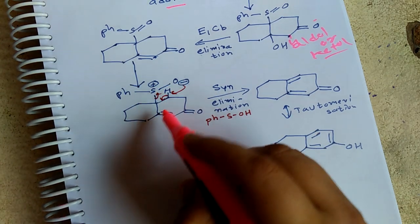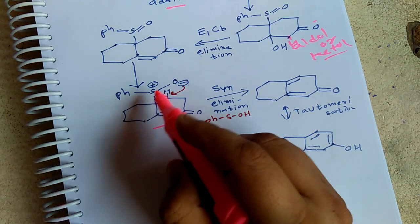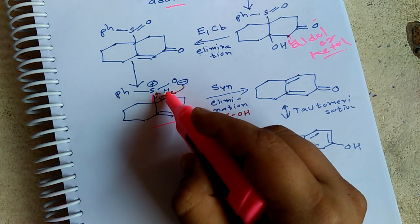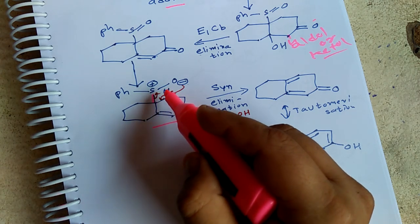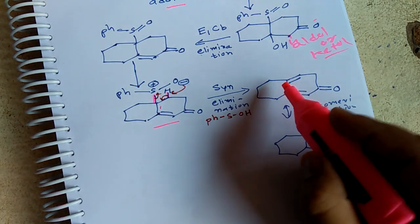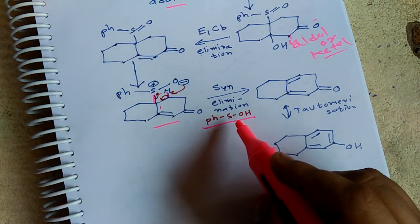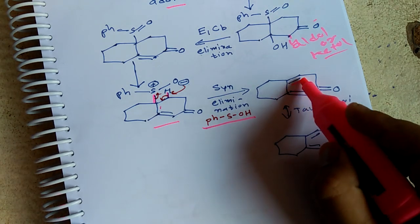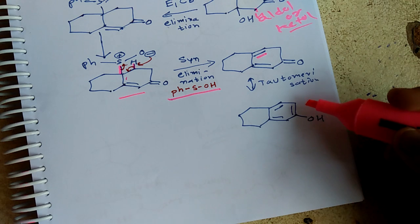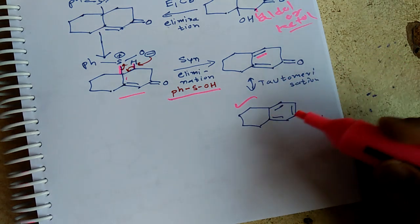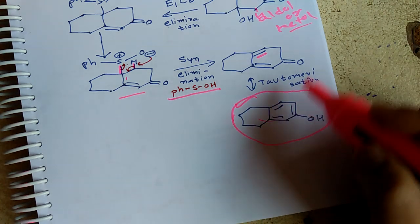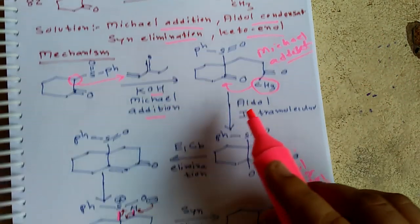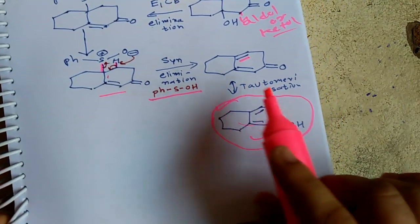Then syn elimination takes place. Whenever a sulfoxide or sulfoxide is present under heating conditions, syn elimination occurs — if the group is above the plane, hydrogen is also removed from above the plane. The sulfoxide is reduced to a sulfide. A double bond forms. Finally, tautomerism of the ketone occurs, and since the enol form is aromatic it is more stable than the keto form. The final answer matches the option given, via Michael addition, intramolecular aldol condensation, syn elimination, then tautomerism.